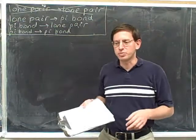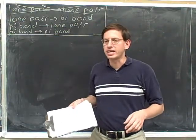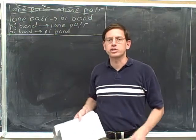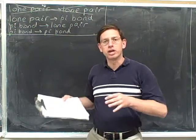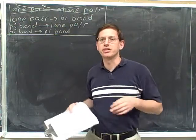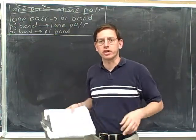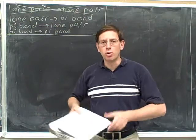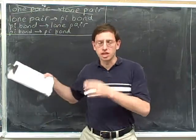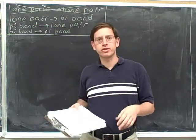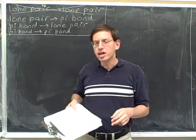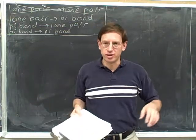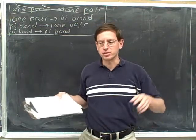Previously, in the previous examples, I gave you resonant structures where I had already drawn in one electron pushing arrow, and then you had to draw the resonant structure suggested by that arrow. What we're going to do now is I'm going to keep giving you the electron pushing arrows, but now I'm going to put two electron pushing arrows in the picture.